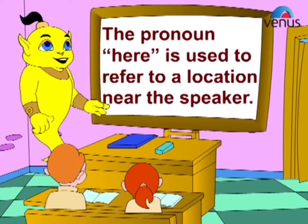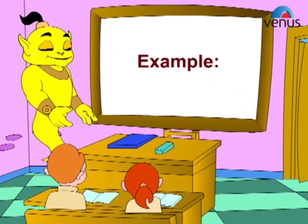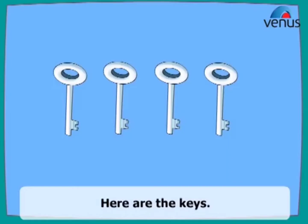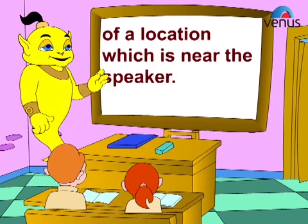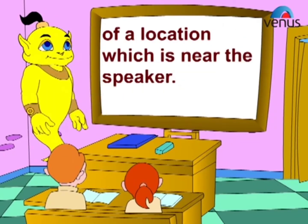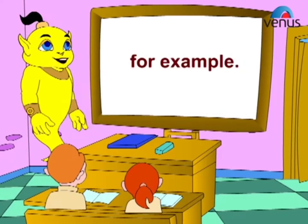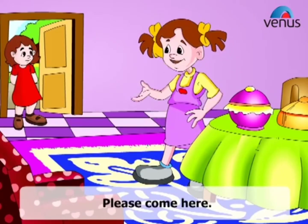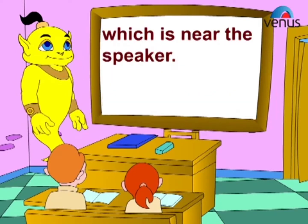The pronoun 'here' is used to refer to a location near the speaker. Example: Here are the keys. In this example, the pronoun 'here' takes the place of a location which is near the speaker. This particular location may be on the table close to the speaker. Example: Please come here. In this example, the pronoun 'here' takes the place of a location which is near the speaker.